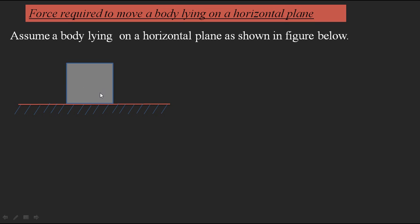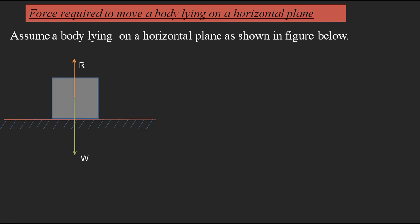The minimum force required to move the body means: more than that force, when you apply it, the motion of the body starts. Now we are going to derive it. Assume the body has weight W acting vertically downward, and the surface applies a normal reaction R vertically upward. For convenience I am representing the normal reaction R from the center of the body, which makes calculation easier while deriving the equation.